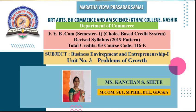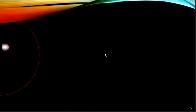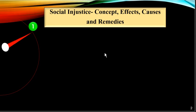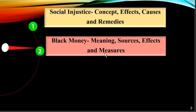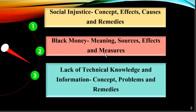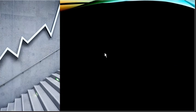Hello and welcome on this platform of KTH Learning. In the earlier lecture we discussed the concept of unemployment, poverty and regional imbalance, including their causes, effects and remedies. In this lecture we are going to study the concept, effects, causes and remedies of social injustice, then black money, and lastly the concept, problems and remedies of lack of technical knowledge and information.